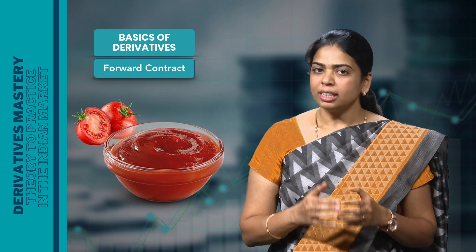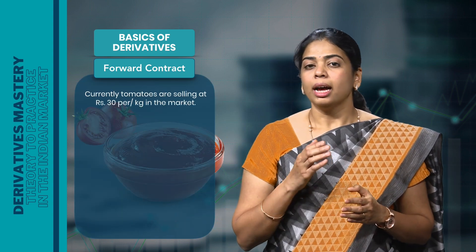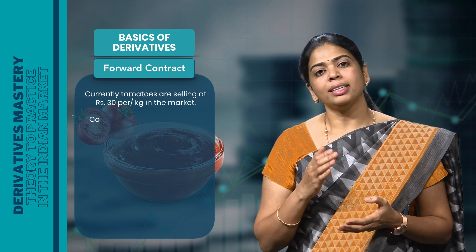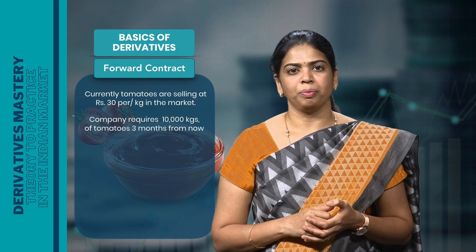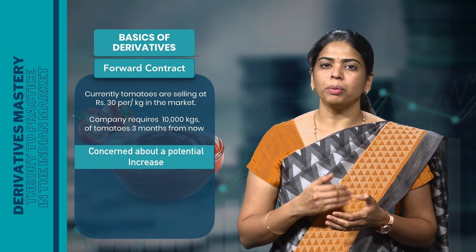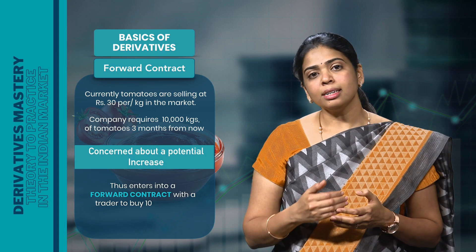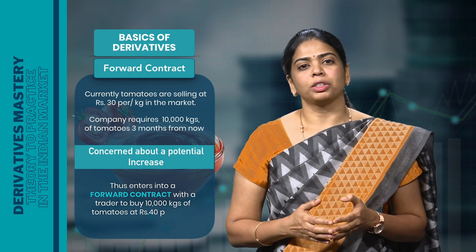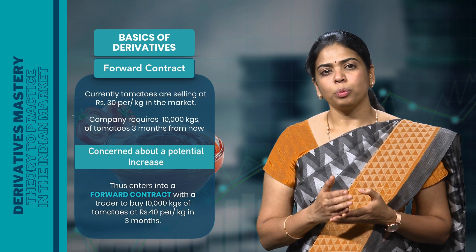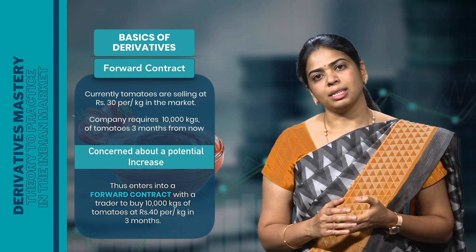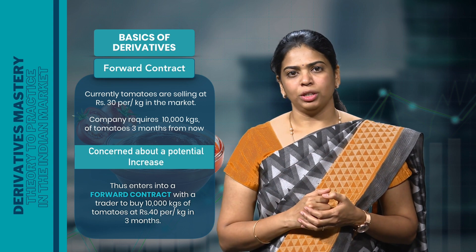Let us say currently tomatoes are selling at Rs 30 per kg in the market. Assume that the company will require 10,000 kgs of tomatoes three months from now. It is concerned about a potential increase in the price of tomatoes. Thus, it enters into a forward contract with the trader to buy 10,000 kgs of tomatoes at Rs 40 per kg in three months. So here, the forward price is Rs 40 per kg.